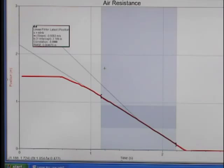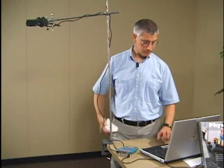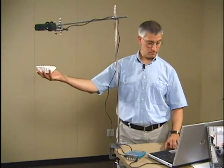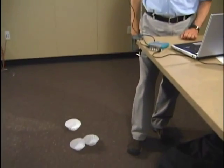I can do the same experiment for two, three and four coffee filters each time getting the slope of the linear portion. If I take two coffee filters, I can do the same thing. Start data collection, drop the filter.